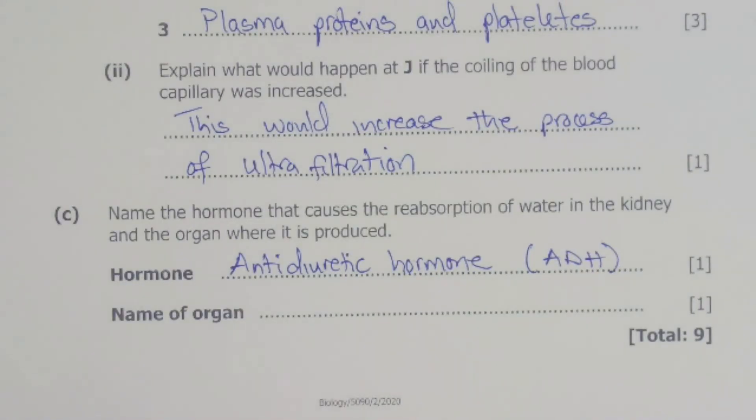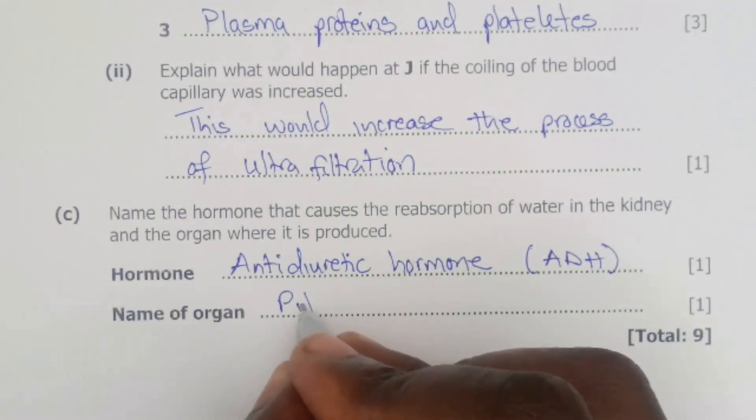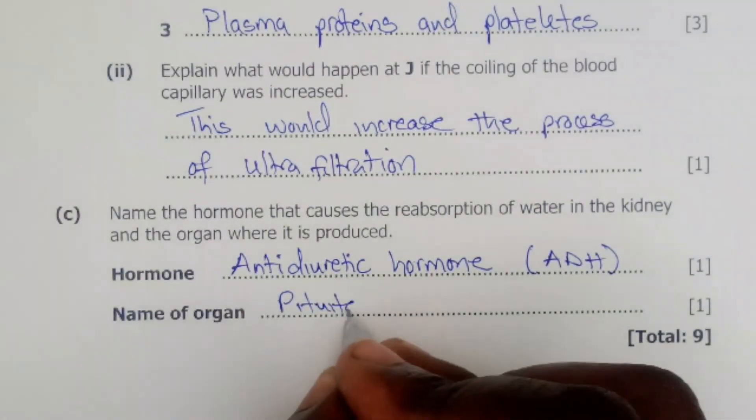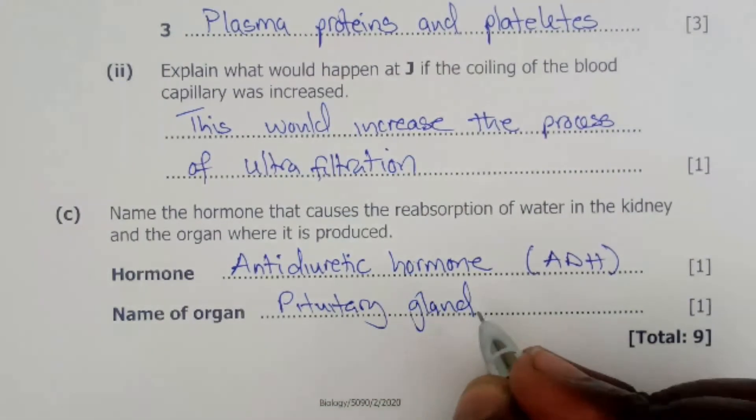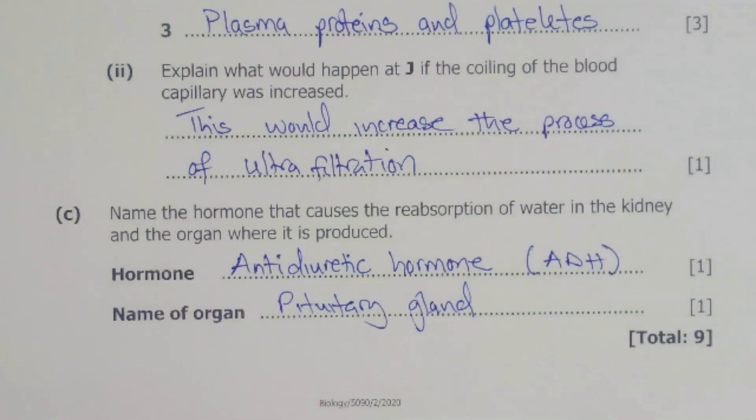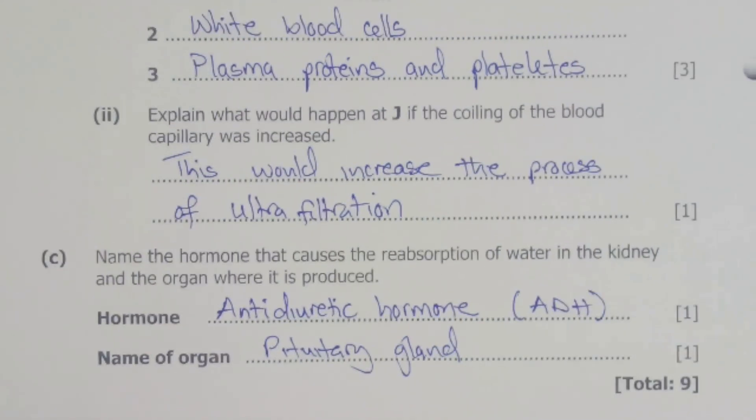The organ where this hormone is actually produced is the pituitary gland. So this one will be produced by the pituitary gland in the brain. So that is where we are going to have our anti-diuretic hormone coming from—it comes from the pituitary gland in the brain.